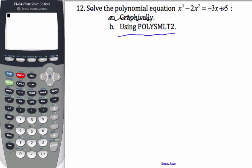In order to use this app, we're going to take this and rearrange it so it's x cubed minus 2x squared plus 3x minus 5 equals 0. We want it to equal 0. That's the key.